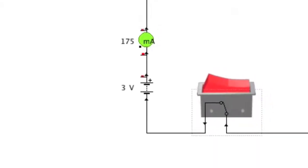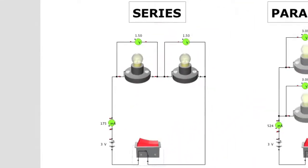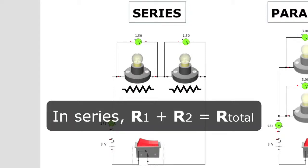Another important note is that each bulb acts as a resistor in the circuit. Putting the bulbs together in a single loop means their resistance is added together to increase the total resistance of the circuit. Every time you add more bulbs resistance increases, lowering the amount of current flowing in the whole circuit.